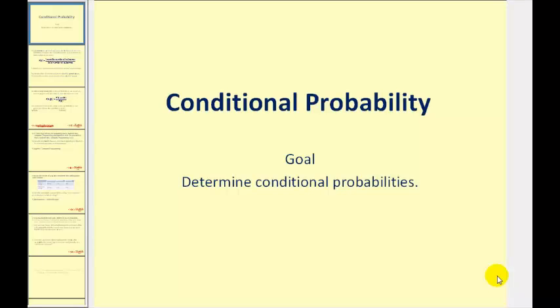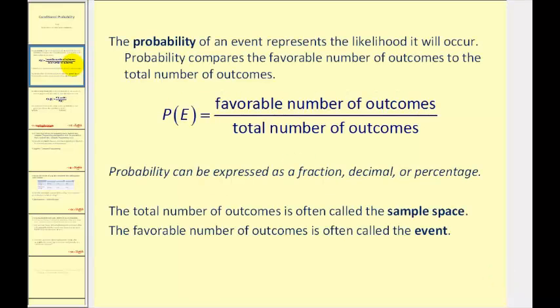Welcome to a lesson on conditional probability. Before we start, remember the probability of an event is equal to the favorable number of outcomes compared to the total number of outcomes, which can be expressed as a fraction, decimal, or percentage.